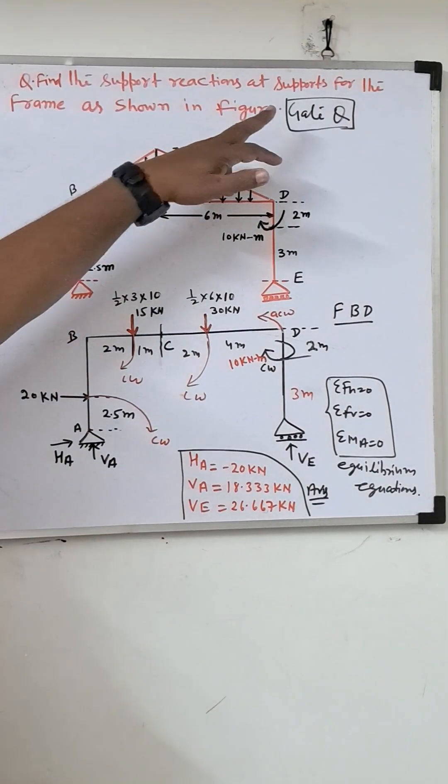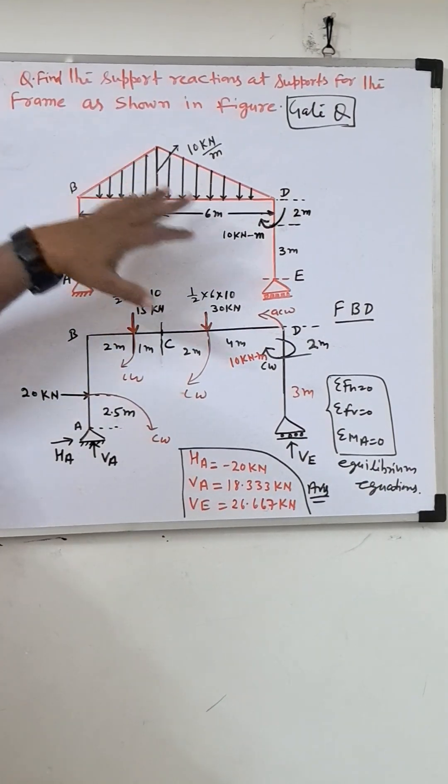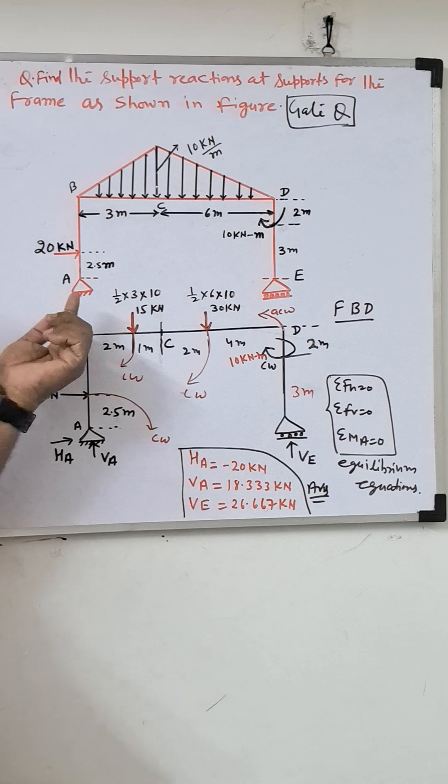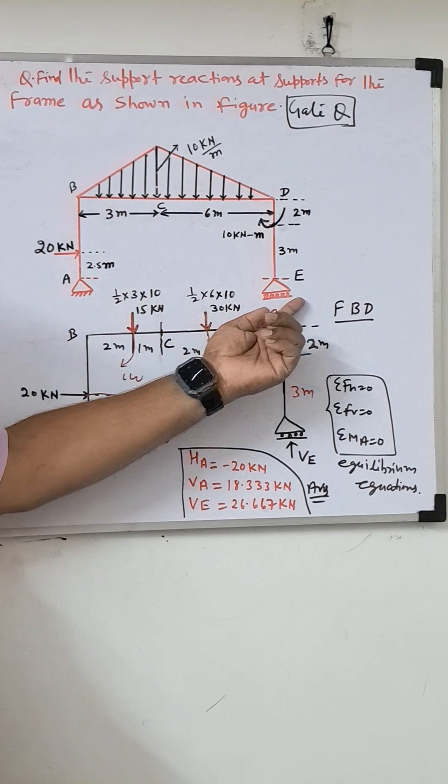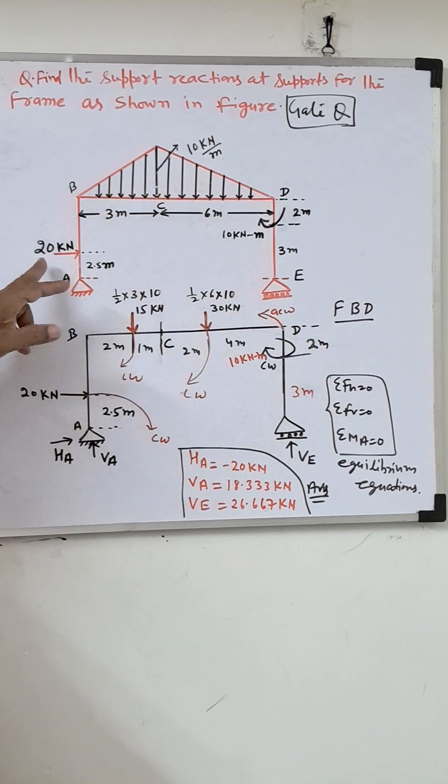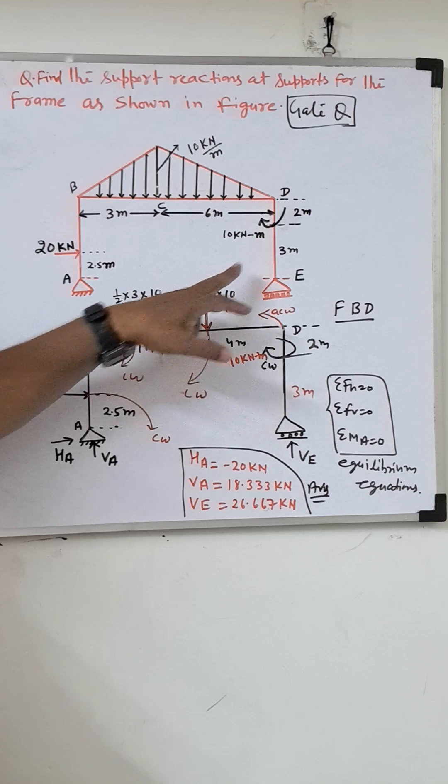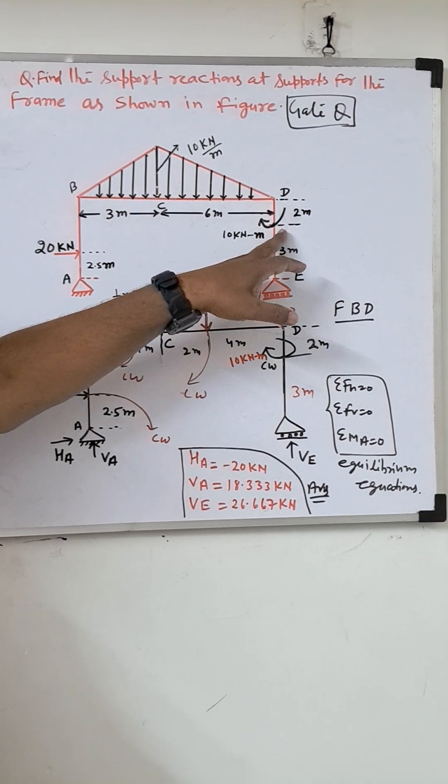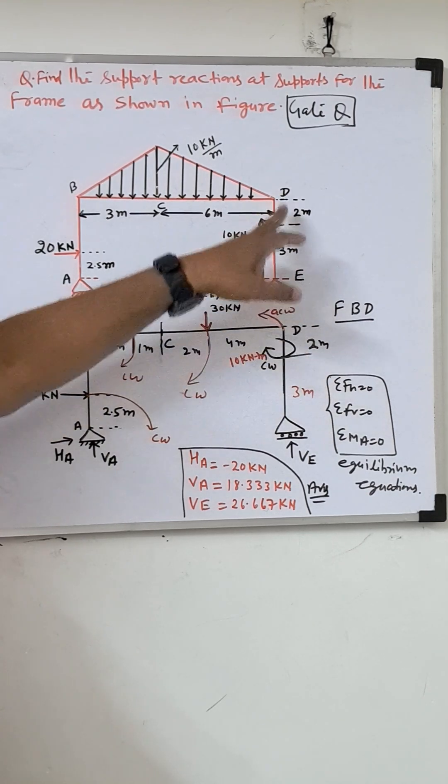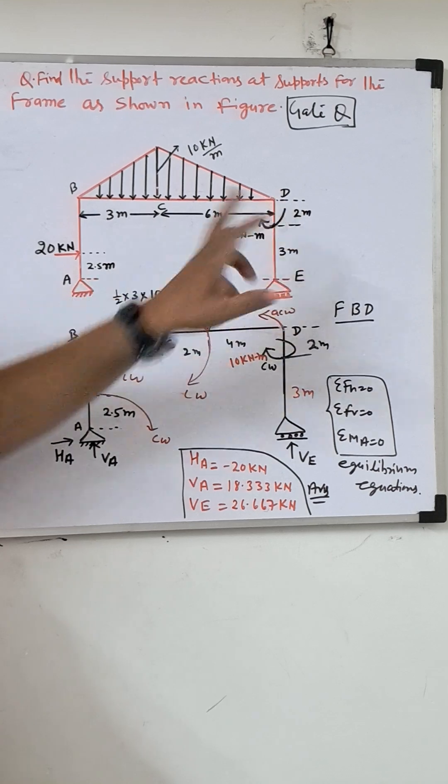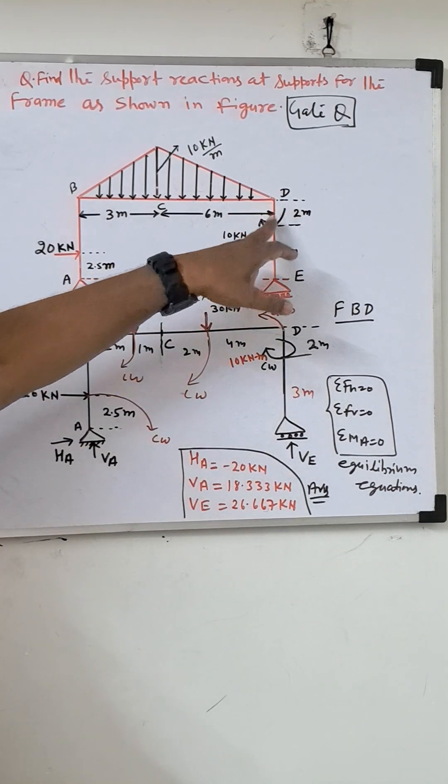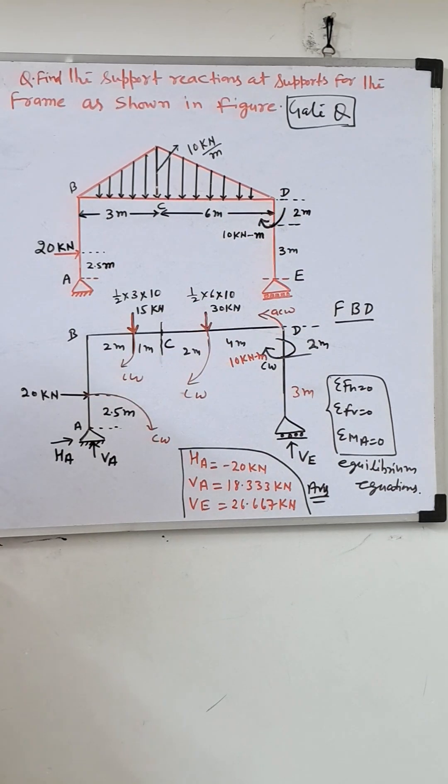Let's see how to find the support reactions for the frame as shown in the figure. What is given: a roller support, UDL, a point load in the frame, and one moment given in the frame at a distance between D and E - two meters from D.